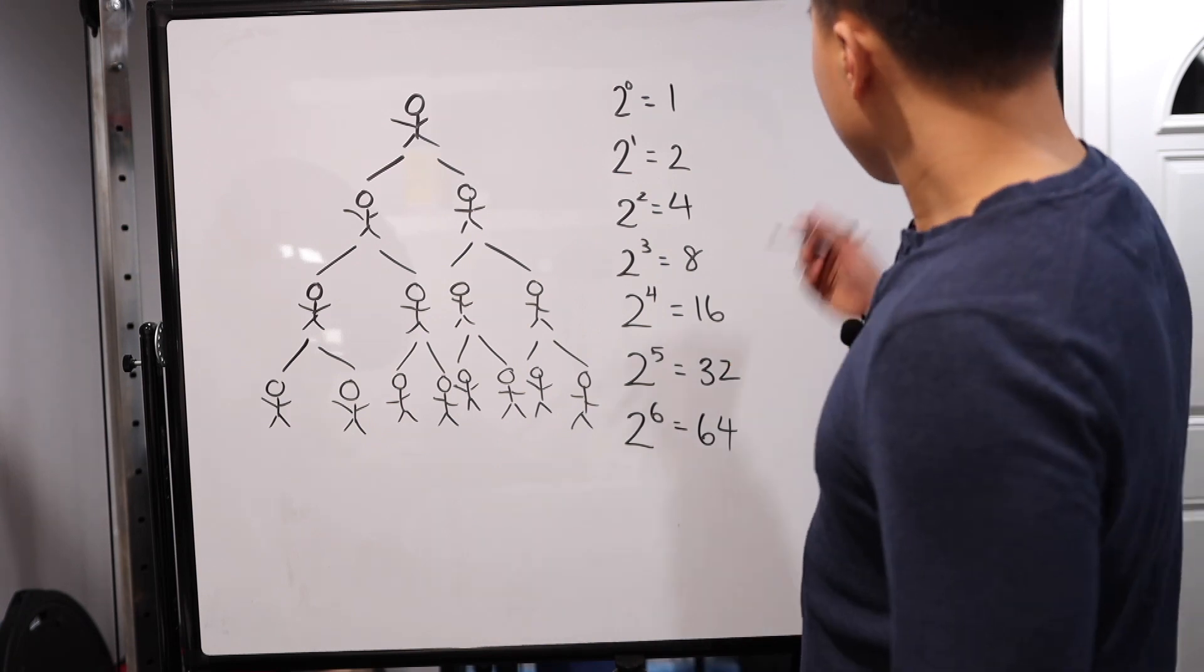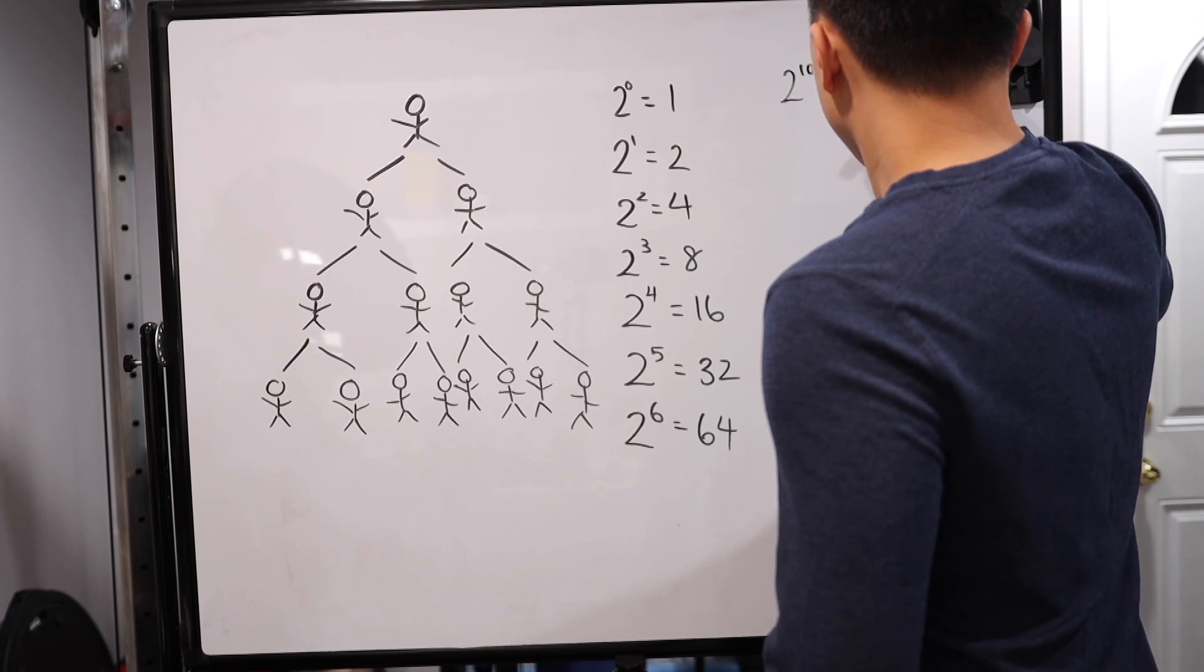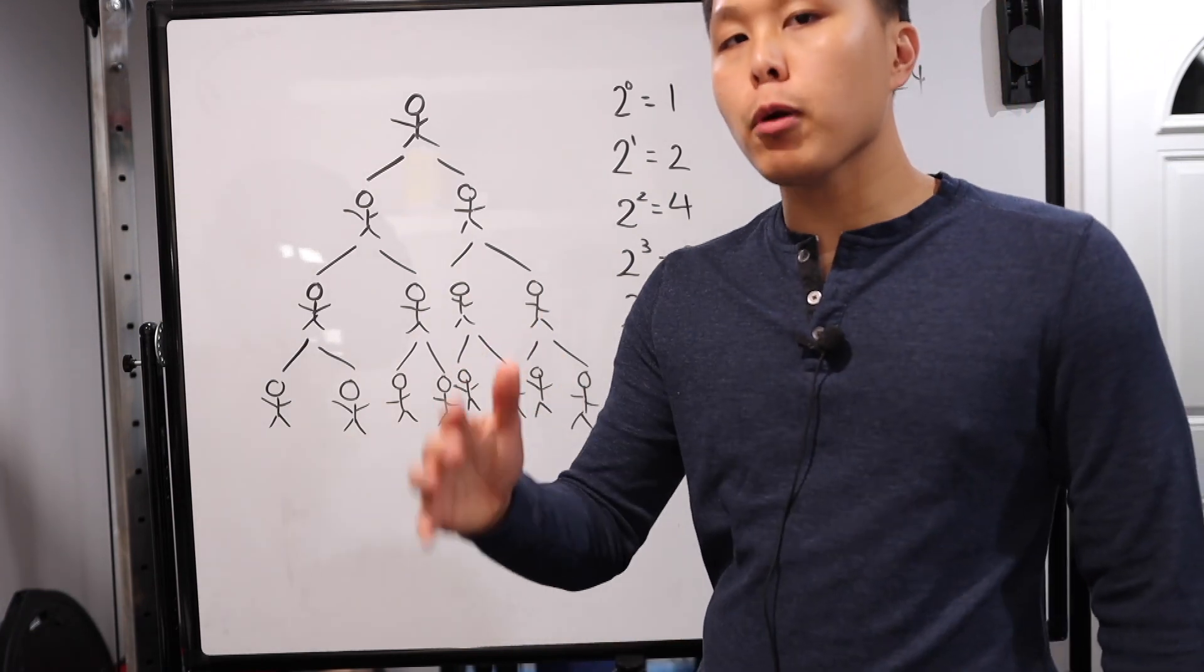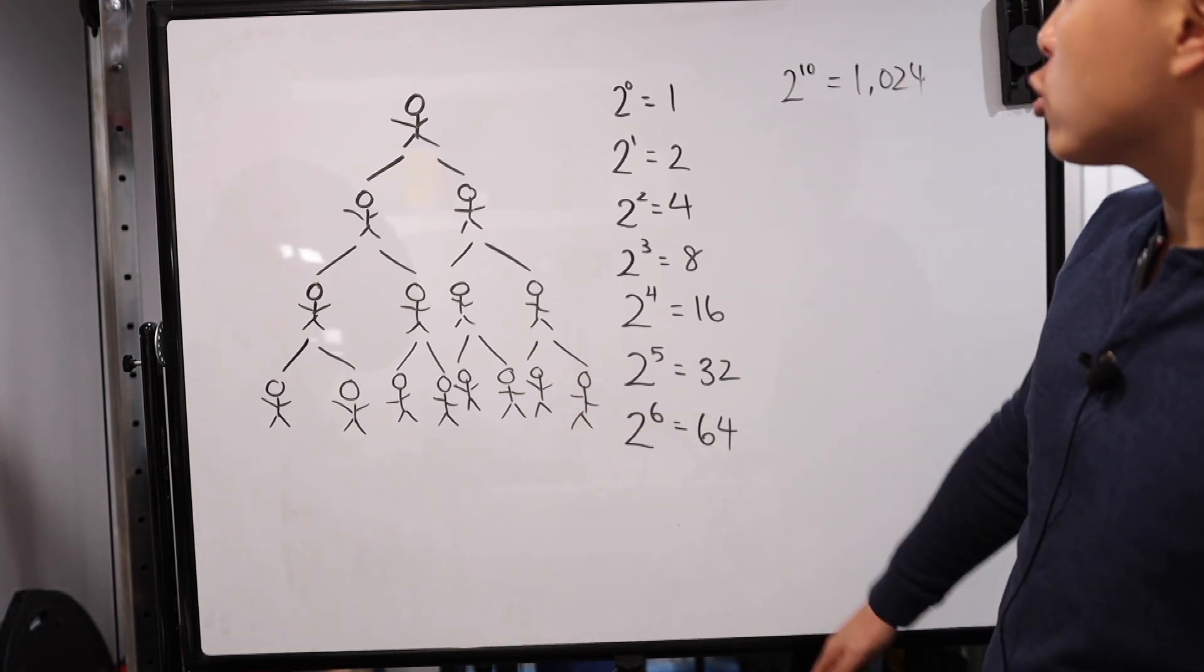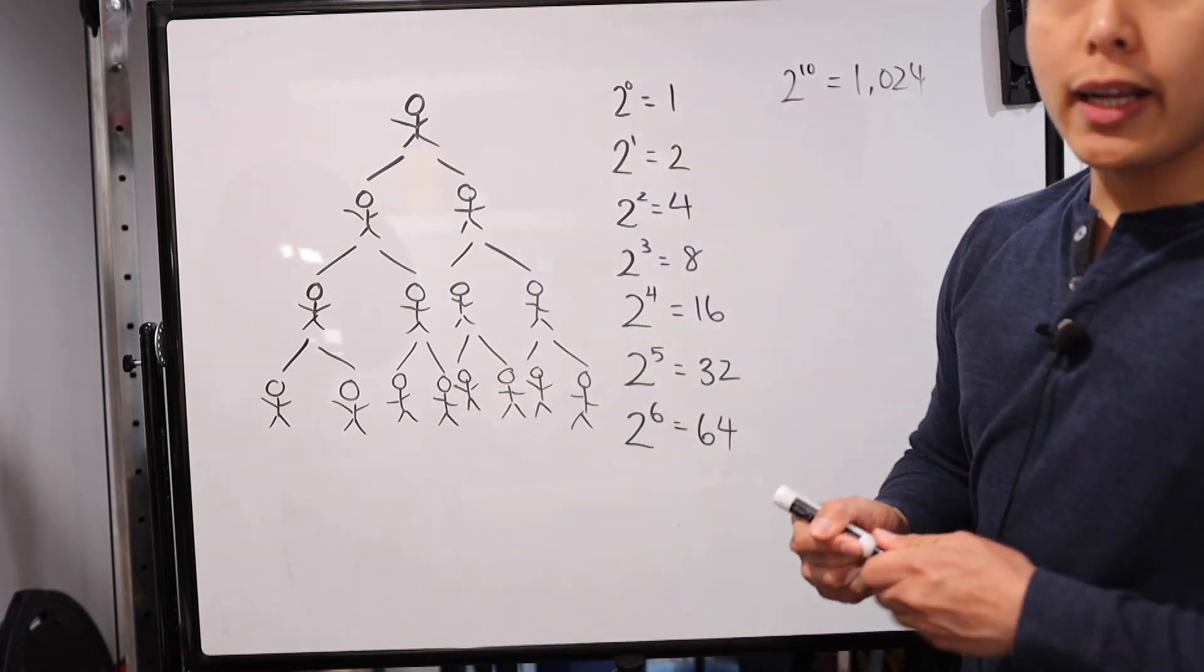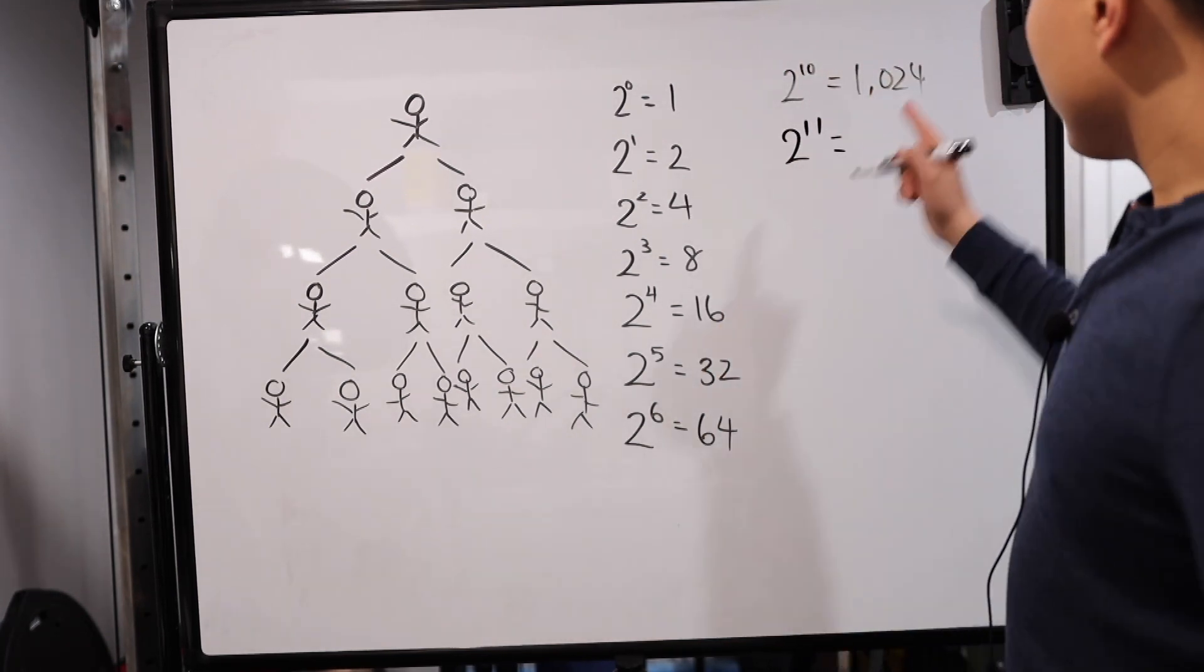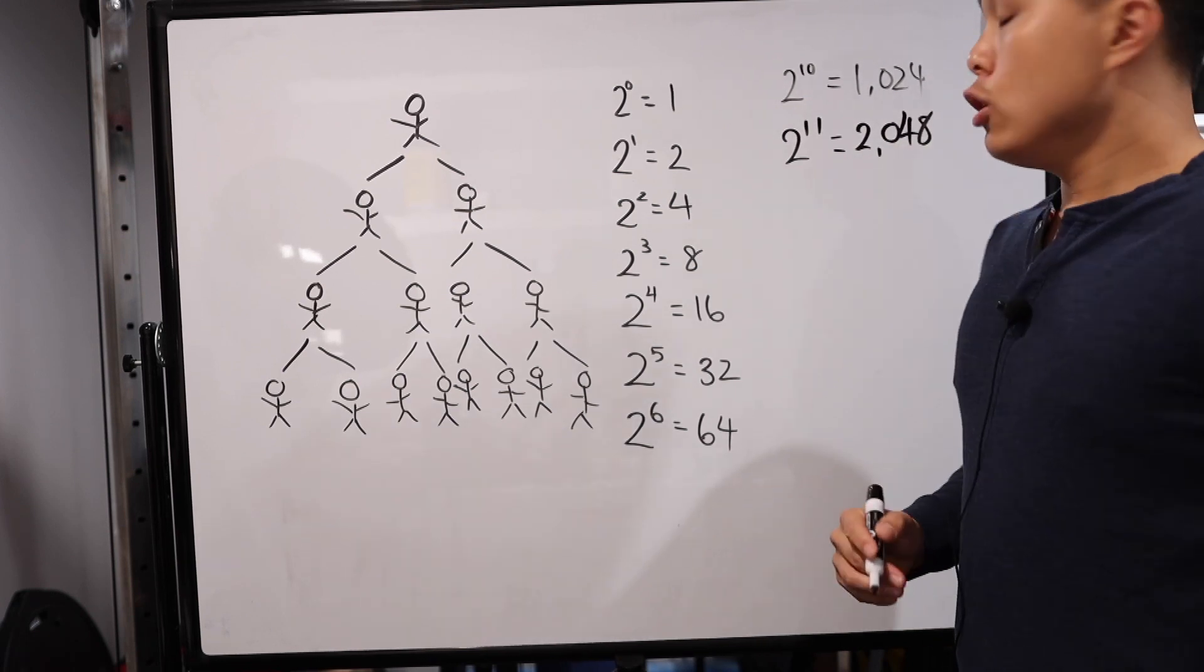And then you keep going. By round 10, that's 1,024. All of a sudden, think about it. 1,024 new members you need into this pyramid scheme, ignoring the fact that there's a bunch in the previous rounds that are already part of it. And all of a sudden, it starts getting astronomically complicated because every time it's still doubling. By the 11th round, this doubles. 2,048 new members.